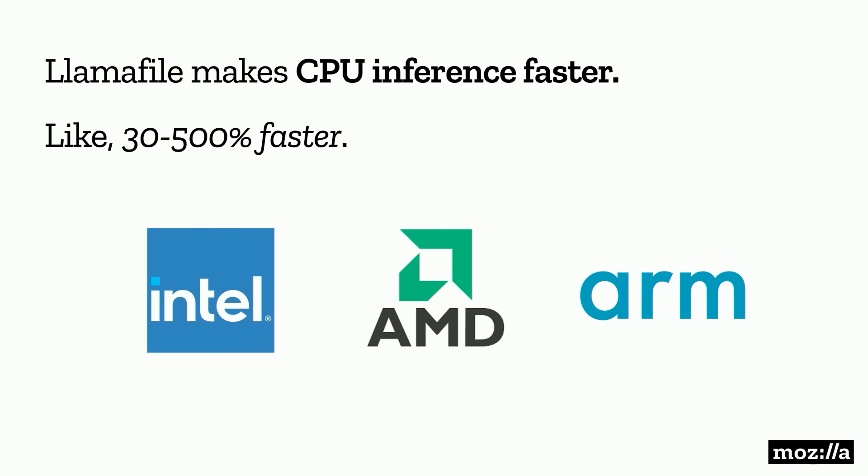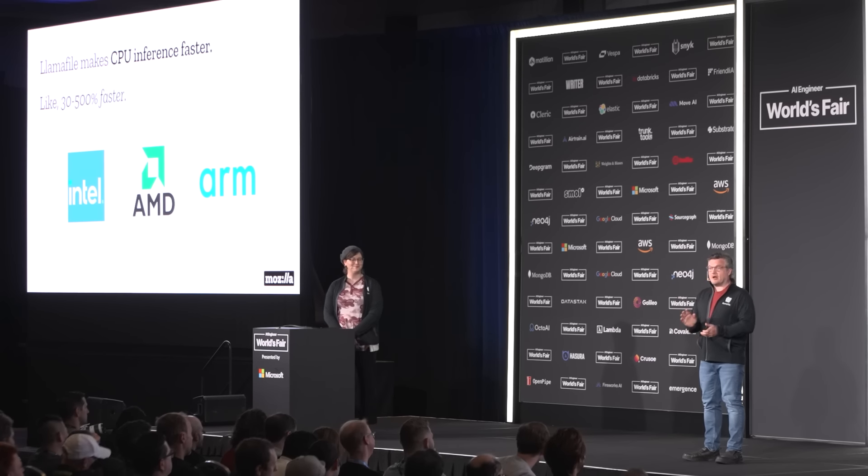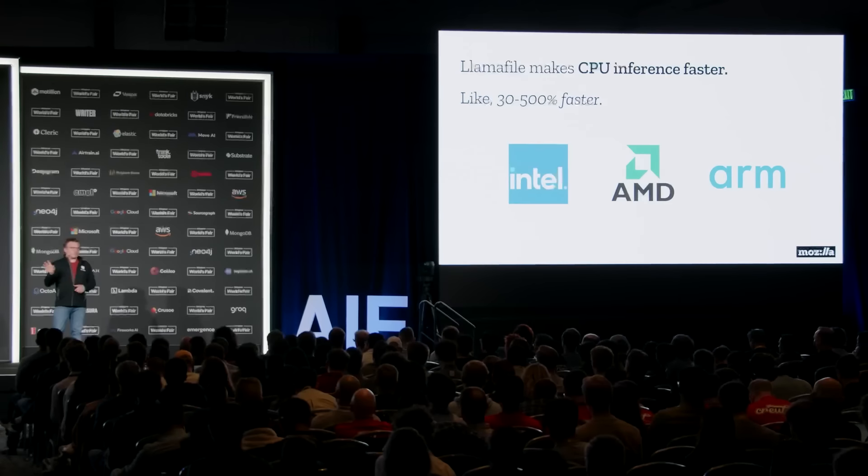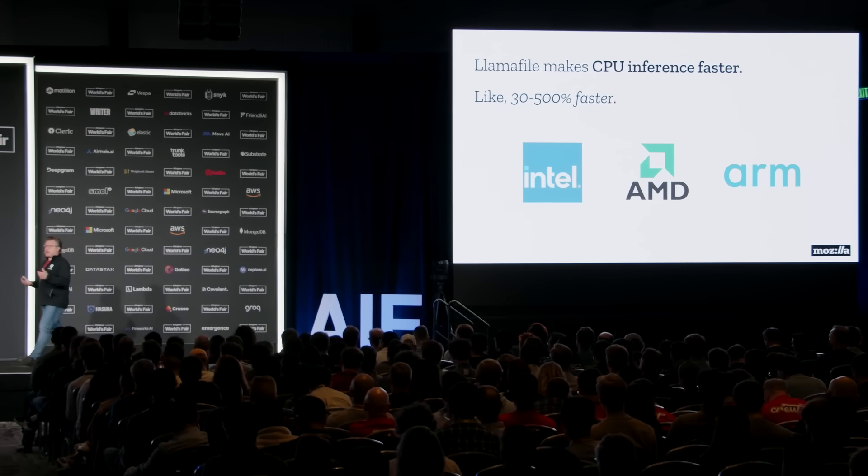You might ask why we need to worry about CPU inference speed when we have fancy GPUs. GPUs are expensive, difficult to source, and consume a lot of electricity. But bigger picture, we have an entire planet of CPUs out there — literally all over the world, great hardware, often affordable hardware — and we are at risk of throwing that all away with this new era of AI. We don't need to do that.